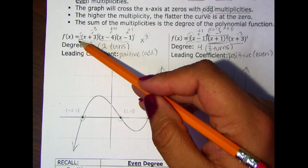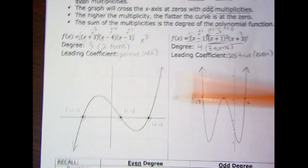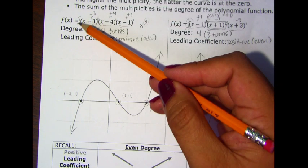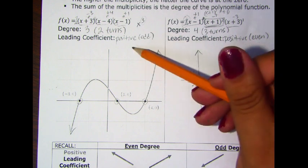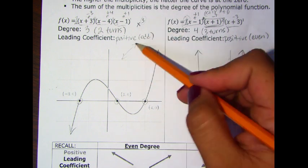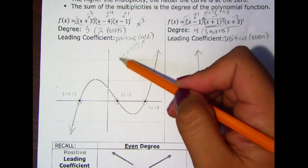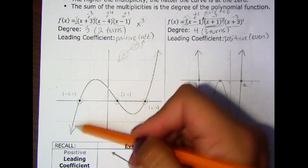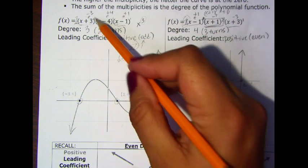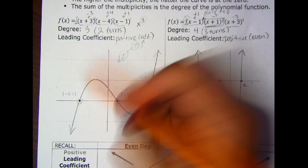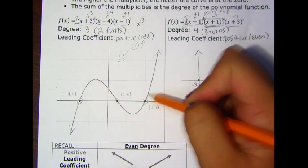The leading coefficient is positive 1, which helps us understand the end behavior of the graph. That positive 1 tells us we're going to have an odd-degree graph that is positive, meaning it creates that positive-line end behavior — going up on the far right and going down on the far left, which is what we have here in this example. And since they all have an exponent of 1, the graph goes through each zero.